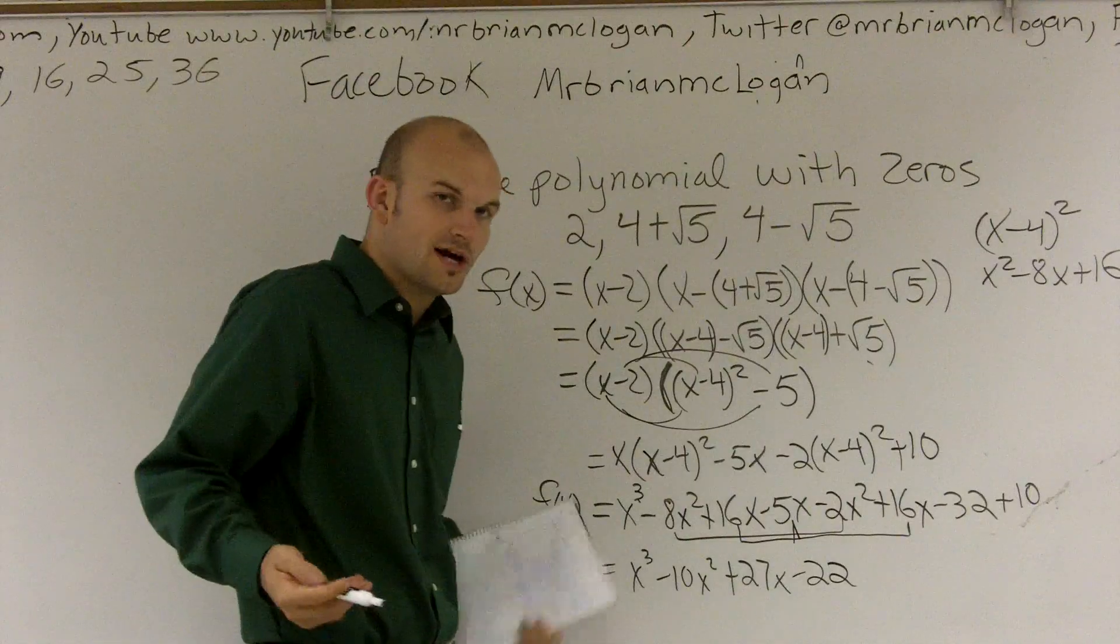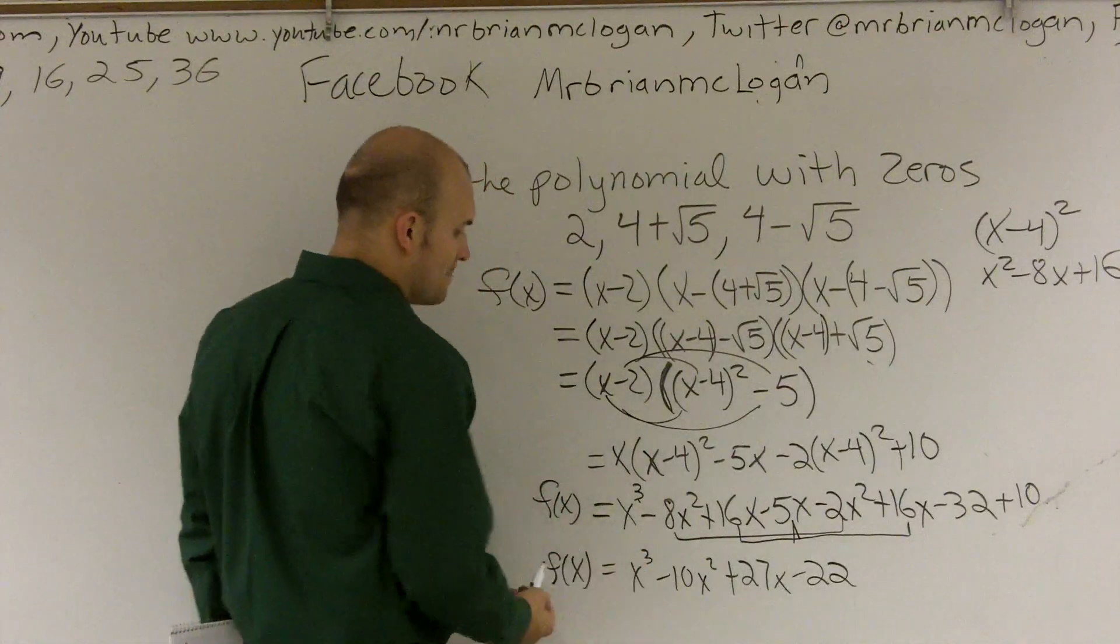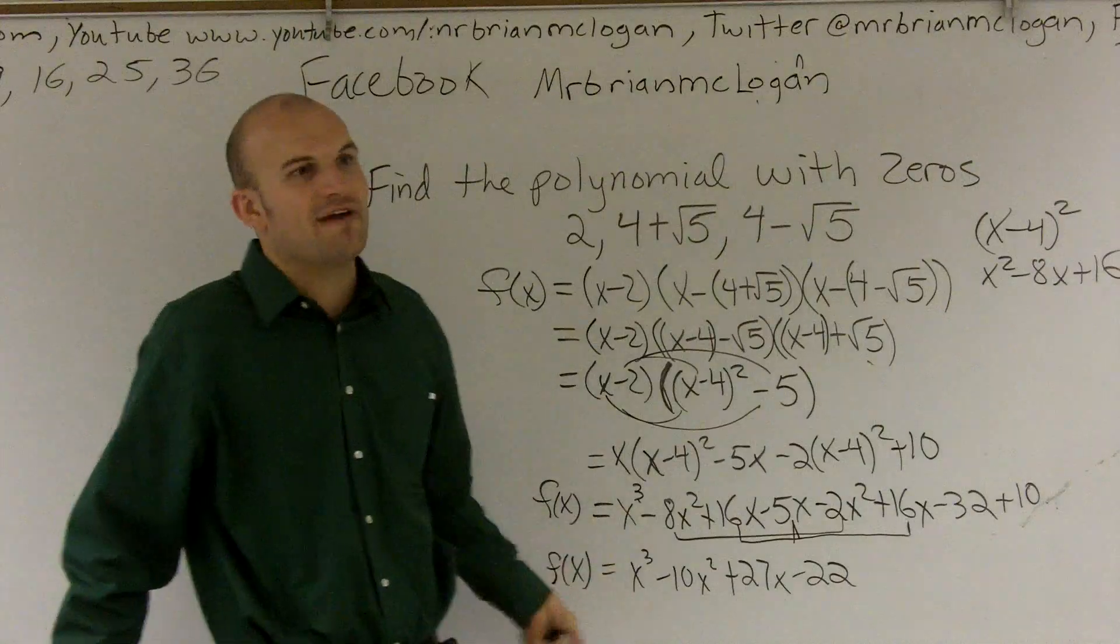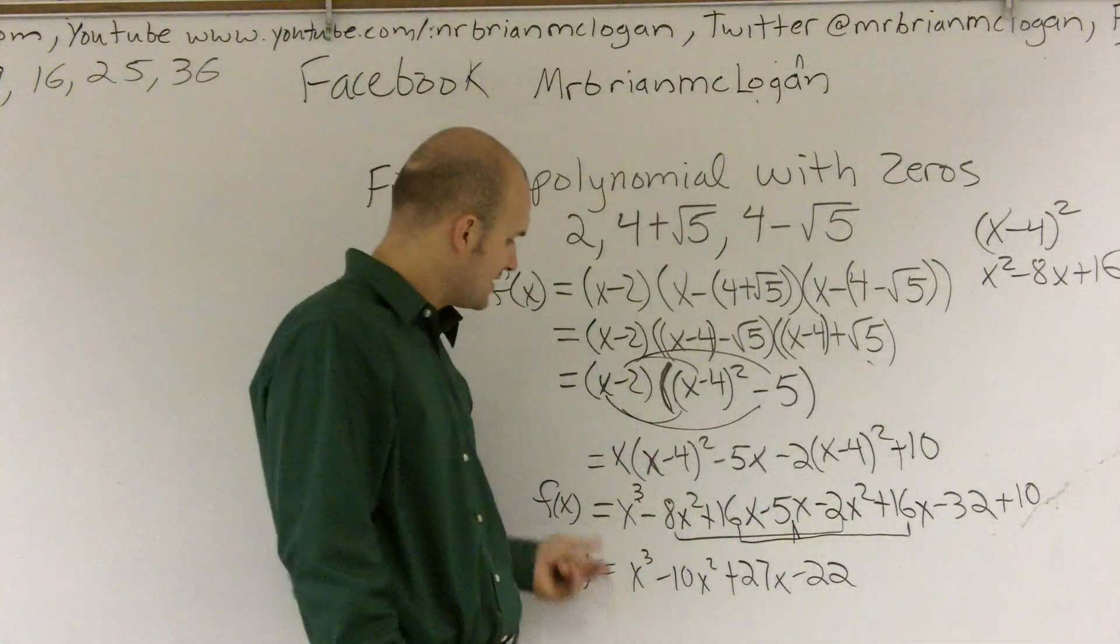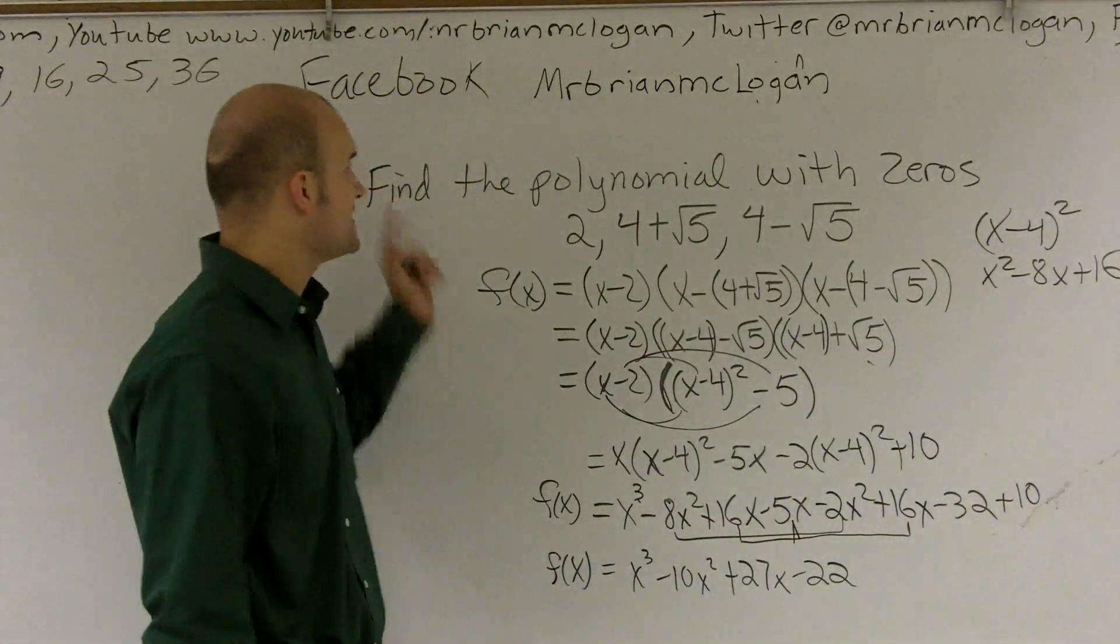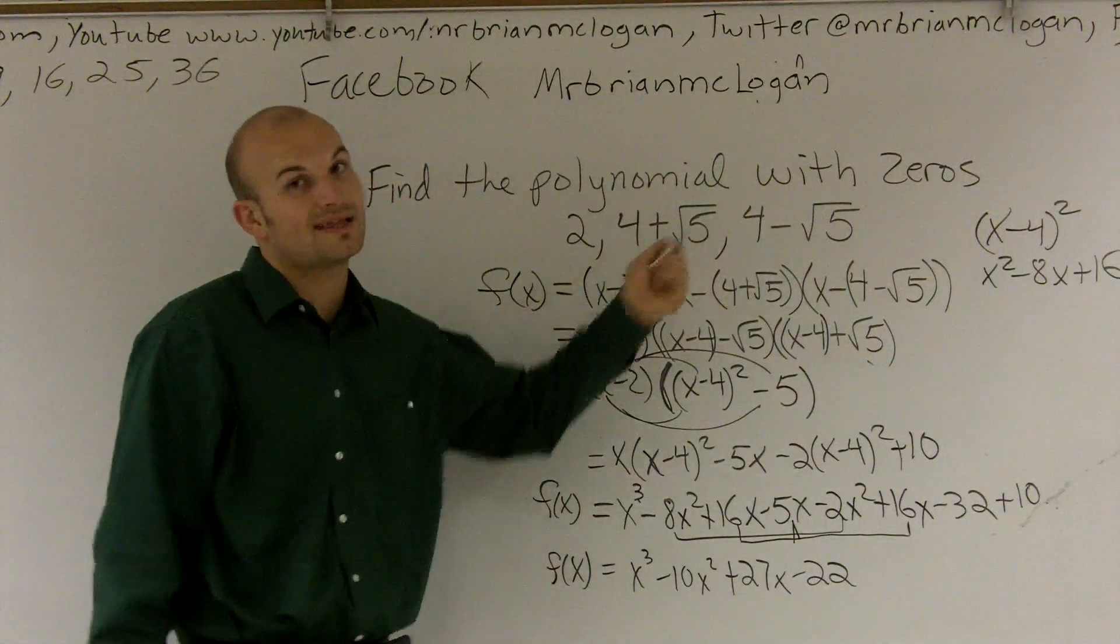And one thing you can also notice, this function can always be multiplied by a factor of a. But you can always, remember, you can always factor out numbers, divide out numbers. But here's going to be my initial function. So that is how you find the polynomial when you have zeros like that.